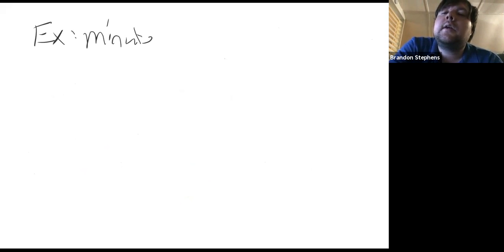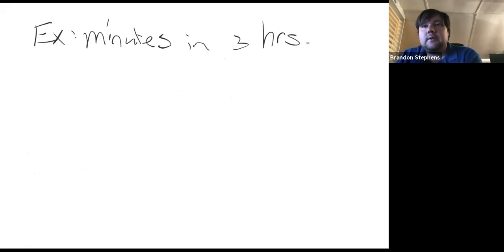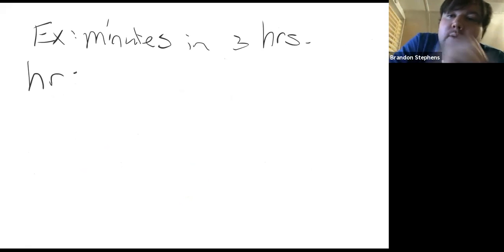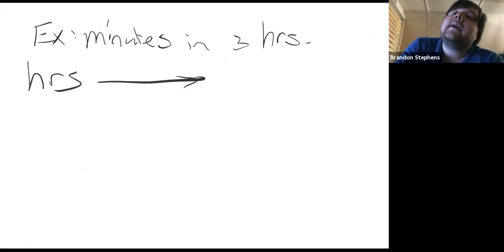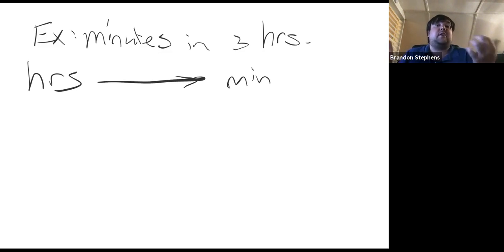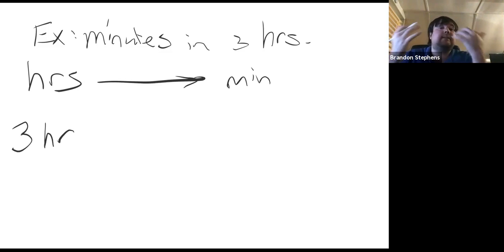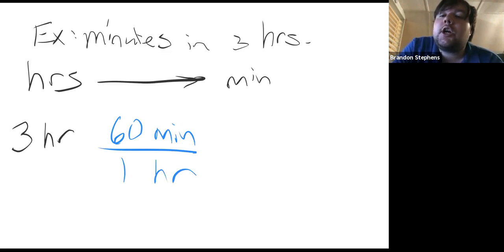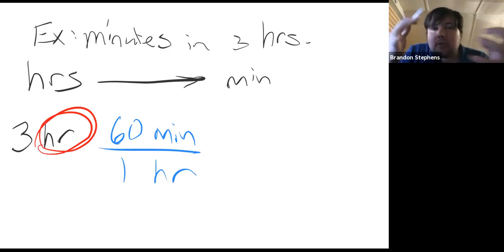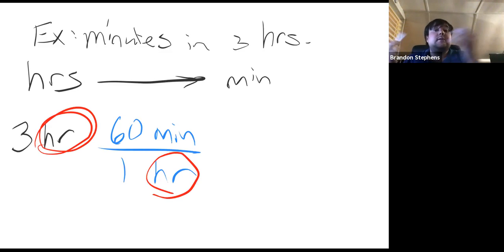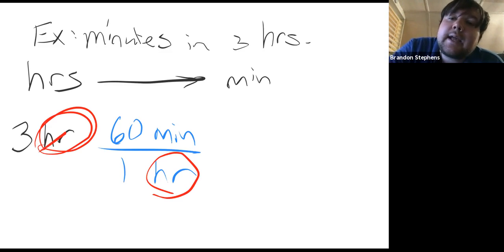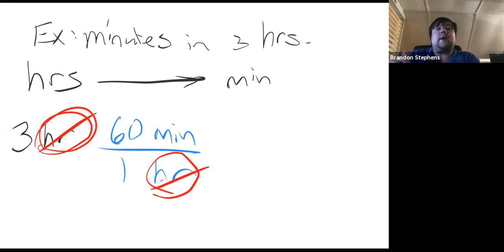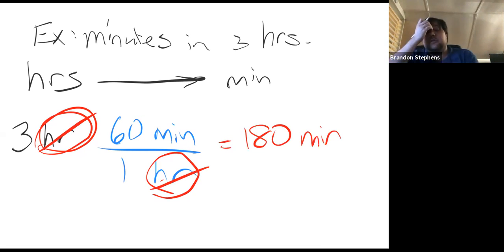Let's redo those examples in the dimensional analysis framework. First: how many minutes are in three hours? We're starting in hours and want to get to minutes. We start with three hours, then multiply by 60 minutes over one hour — put hours on bottom so the hours cancel. We're now in minutes. Three times 60 is 180 minutes, just like before.